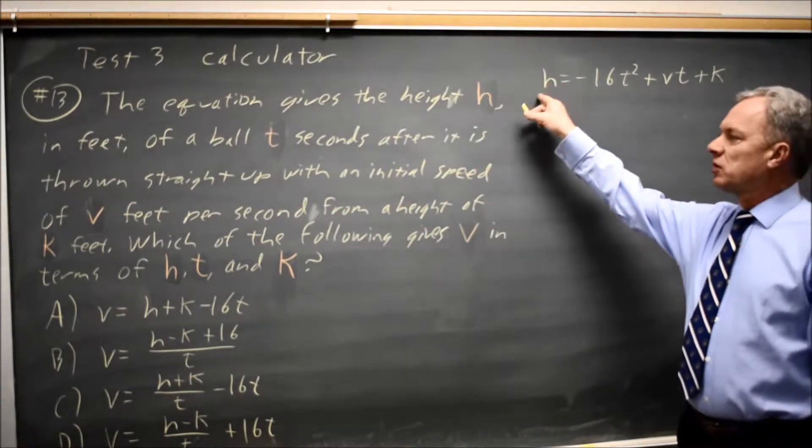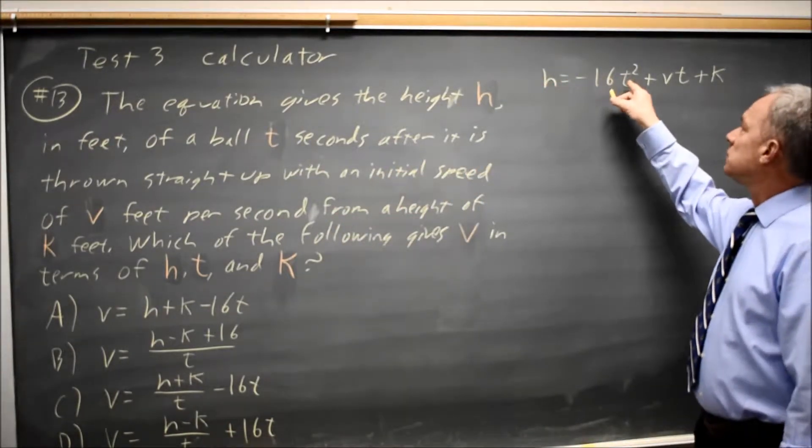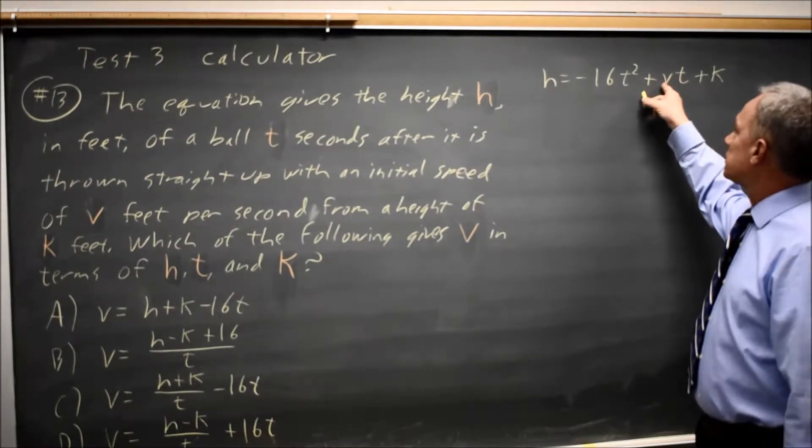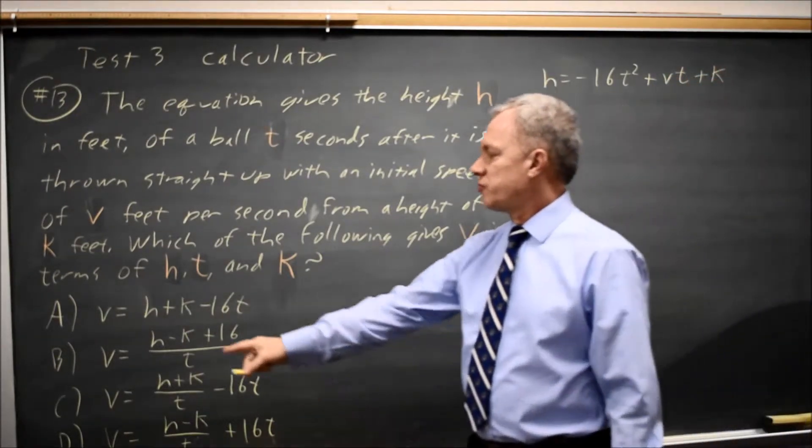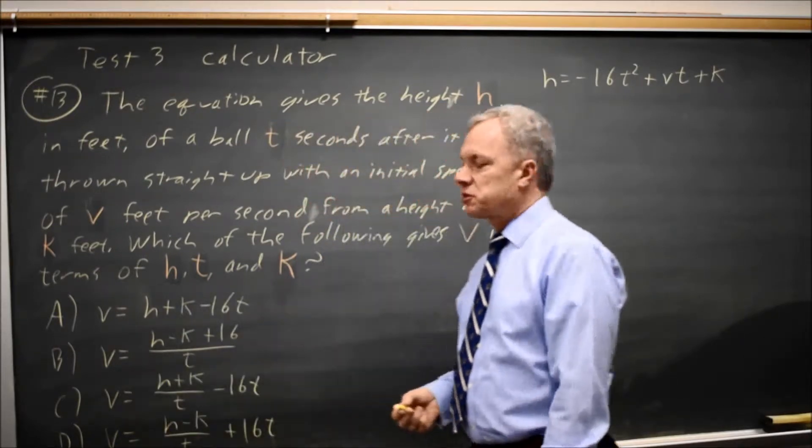They give you a formula for height in terms of time t, initial velocity v, and initial height k. And the question asks you to solve for v, as you see from all four choices which are solved for v.